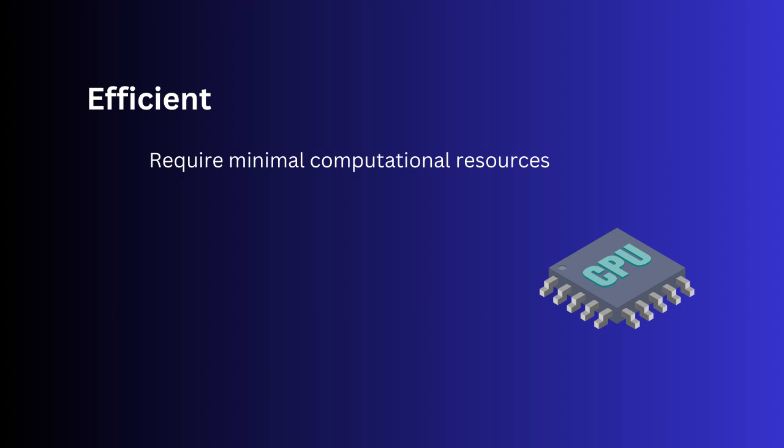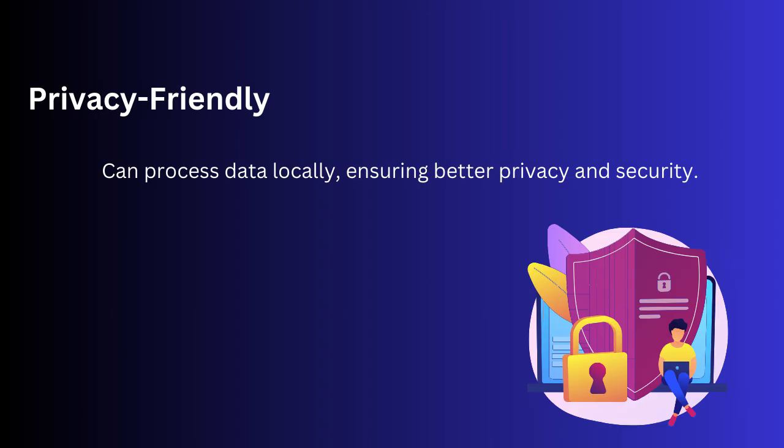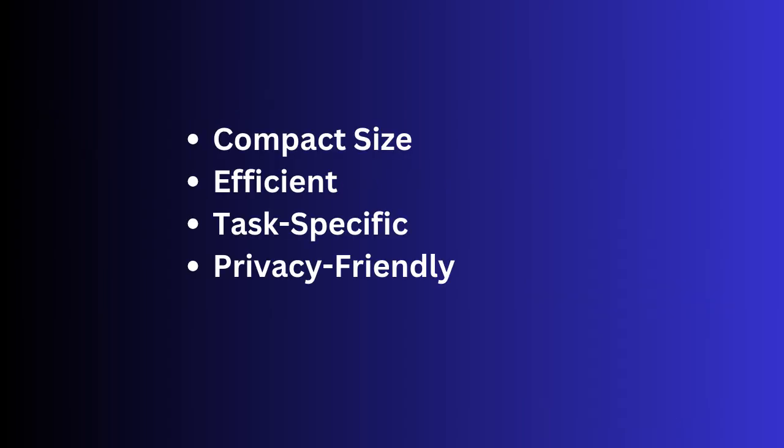The second characteristic is efficiency: SLMs require minimal computational resources and are suitable for running on CPUs or small devices. I personally faced issues installing LLMs locally because they need high computational power — GPU or TPU — which is a headache for developers. With small language models, they are minimal in size and can run on a CPU or small device. Third, SLMs are task-specific, often trained for specialized tasks rather than generalized understanding. Fourth, they are privacy-friendly — they can process data locally, ensuring better privacy and security.